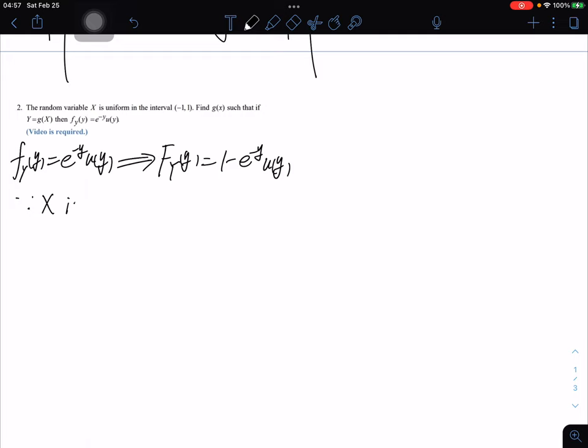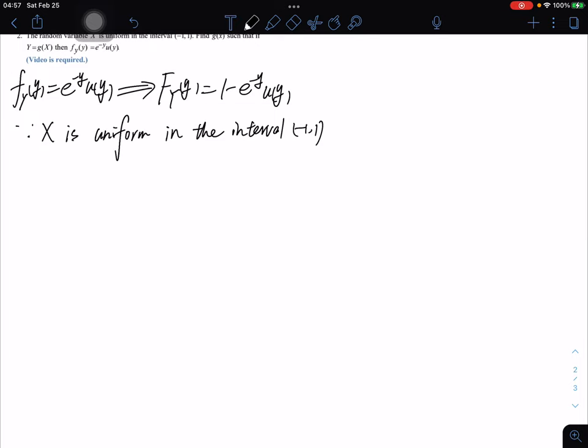Since X is uniform in the interval minus 1 to 1, we can get that f_X is a linear function. So we set f_X equals to... Okay, we know that this is a parameter. We can set this randomly. I choose to set it as X divided by 2.